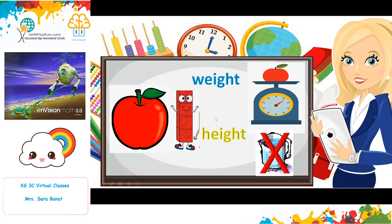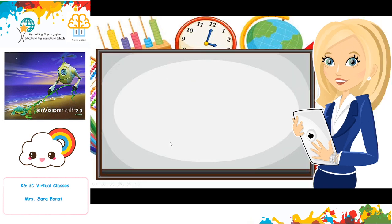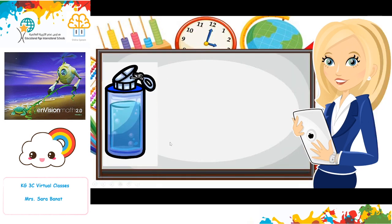There is something that cannot be measured but can be described — like the color of the apple. I can describe this apple as a red apple, but I can't measure the color. Okay, let's see another example.